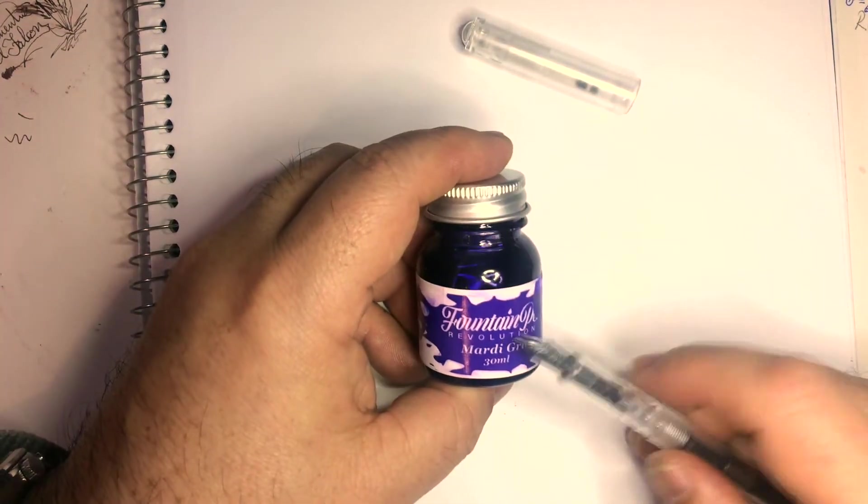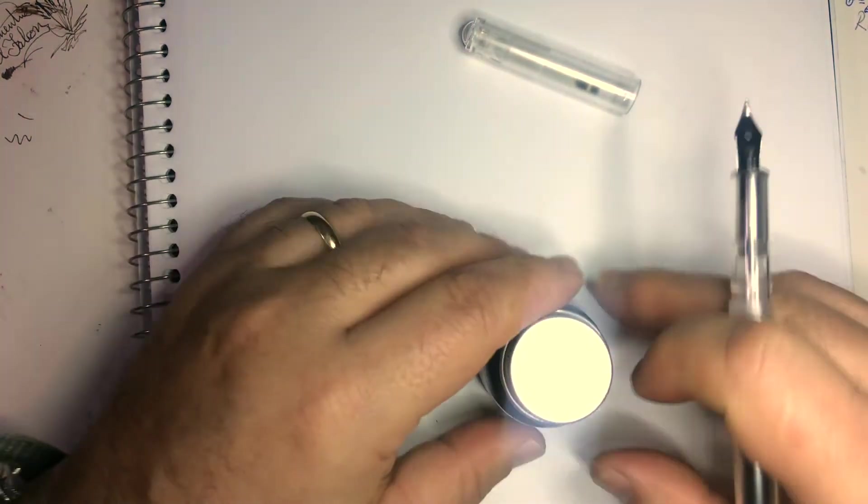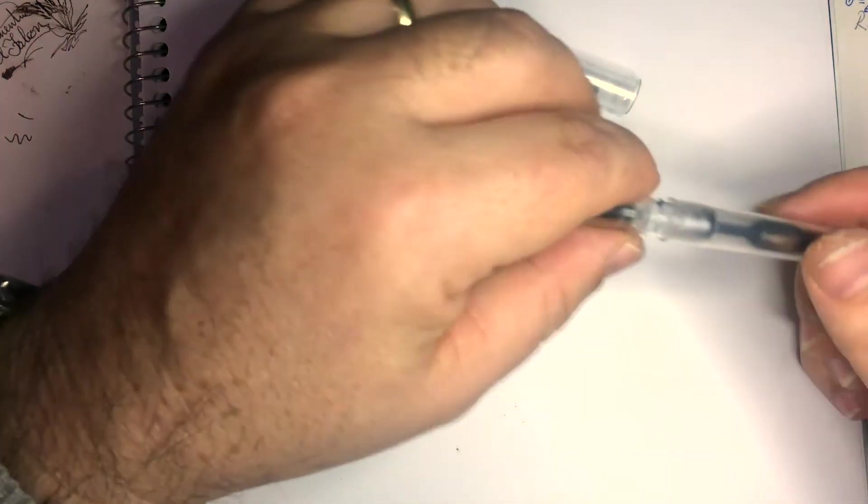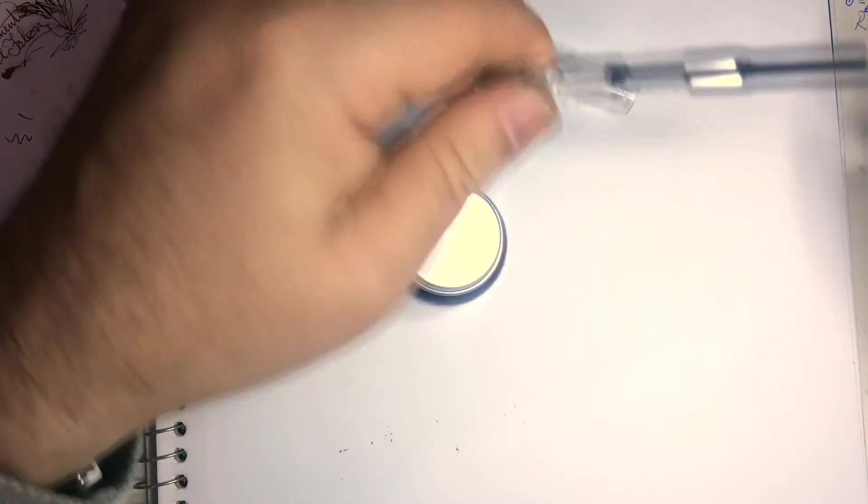This is Fountain Pen Revolution Mardi Gras ink. I like this ink. It's got lots of different colors. It's a sheening and shading ink. I don't like metal caps, but I will just cover that up, see if I can kill the reflections here.